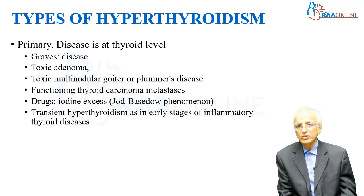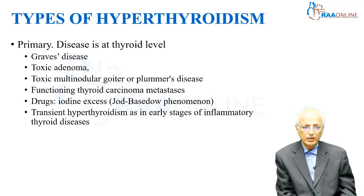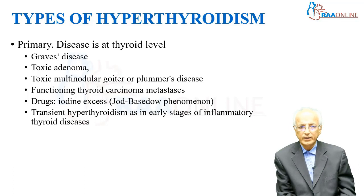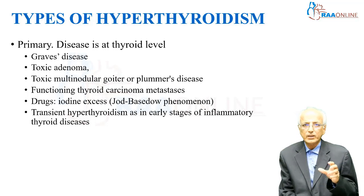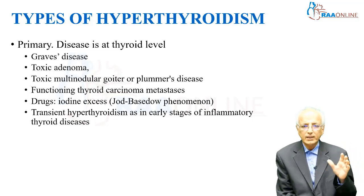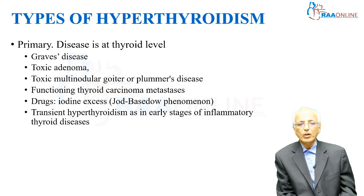Functioning thyroid carcinoma with metastasis — very unusual. Drugs, iodine excess — classically we call it Jod-Basedow phenomenon — where there is increased thyroid production because of iodine excess. There is also a group of diseases which produce a transient hyperthyroidism, meaning a period of a few months of increased thyroid production. This classically happens in inflammatory thyroid disease, and it can also happen in radioactive ablation.